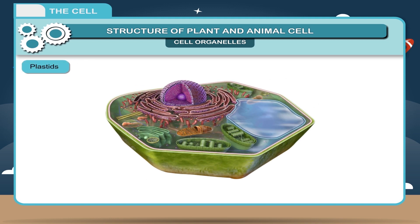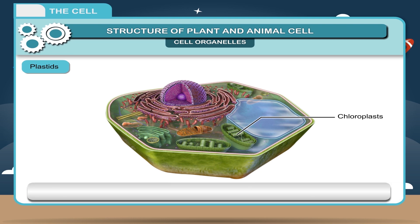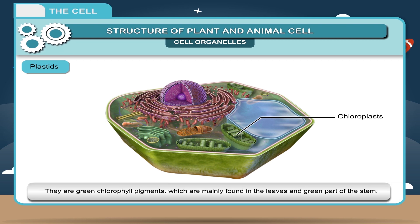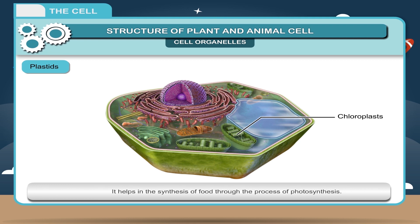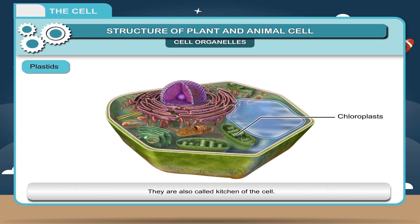Plastids. They occur only in plant cells and are of different colors. Plants use them for storage and manufacturing of food material. They are of three types. Chloroplasts are green chlorophyll pigments which are mainly found in the leaves and green part of the stem. They help in the synthesis of food through the process of photosynthesis and are also called the kitchen of the cell.